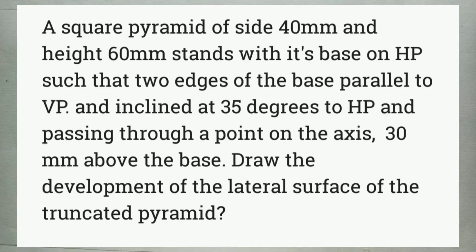Hi friends, here is my own square pyramid. A square pyramid of side 40 mm and height 60 mm stands with its base on HP such that two edges of the base are parallel to VP. It's cut by a plane perpendicular to VP and inclined at 35 degrees to HP, passing through a point on the axis 30 mm above the base. Draw the development of the lateral surface of the truncated pyramid.